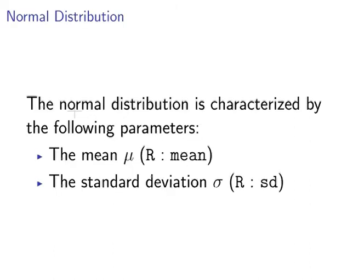Consider the two key parameters that define the normal distribution. They are the mean, mu, which is that Greek symbol there, but in R it's specified simply as mean. There's also the standard deviation, sigma, which in R is specified as SD, standard deviation.